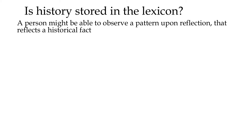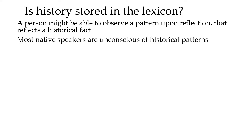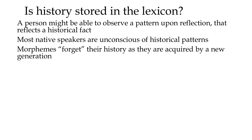This raises the question of whether the histories of words get stored in the lexicon. Irregularity is a result of historical processes. A learned person might reflect and notice some relationship — that a word came from somewhere else. But most native speakers are unconscious of these historical patterns. Morphemes forget their history as they're acquired by a new generation. Babies just know what they heard; they only acquire language as it's used in that moment, never with all its history attached.